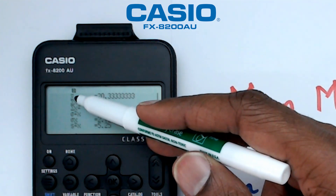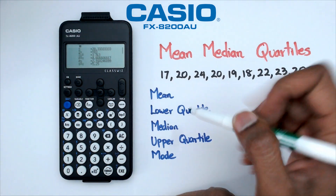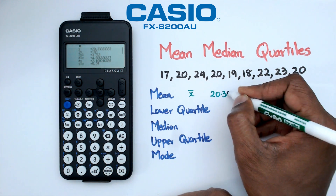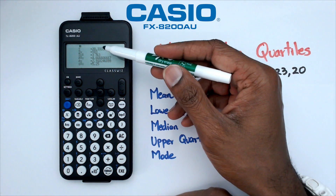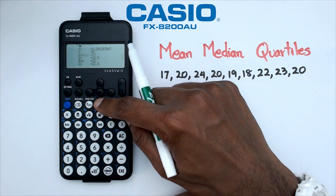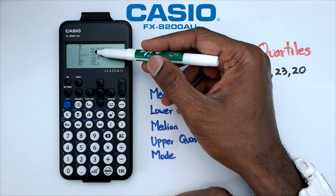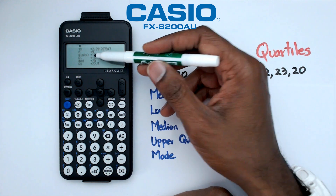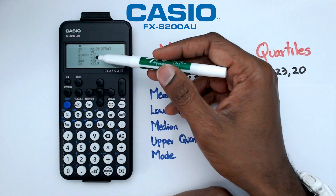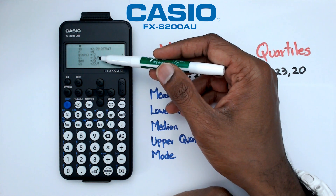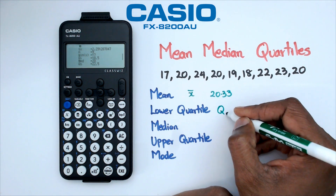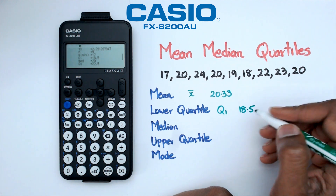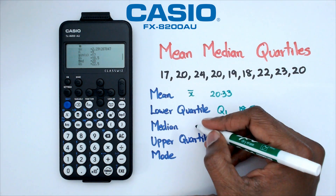I'll write down what the codes mean. The first one is x̄ — x-bar with a little bar on top — which is the mean. In this case the mean is 20.33. We also have standard deviation, but moving on: n equals 9, which tells us that nine pieces of data were entered. Then we have minX which is 17 — that's our minimum value. After minX we have Q1 which is 18.5, and Q1 is the lower quartile.